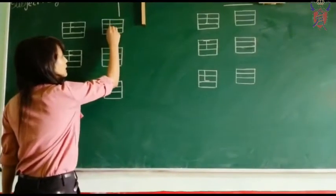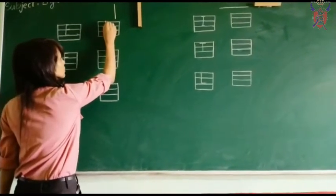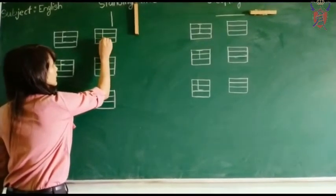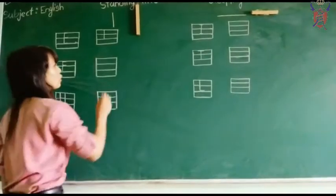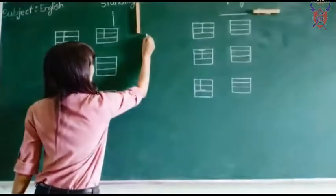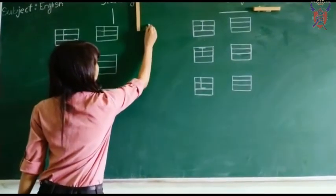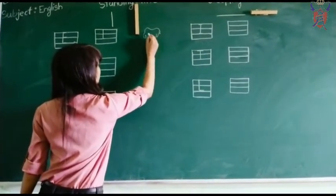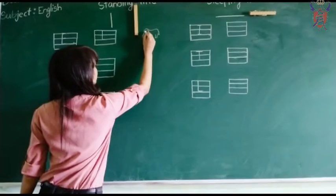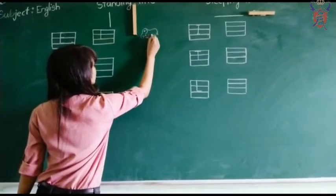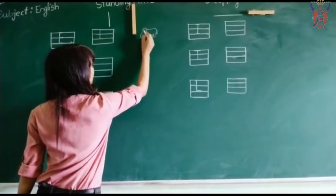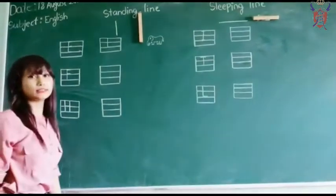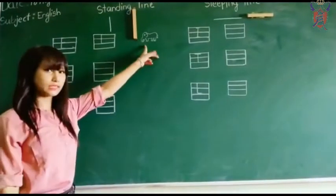See how we will write letter E. First you have to draw a standing line. In upside you will draw a sleeping line, then again a sleeping line, then again one more sleeping line you will draw. E for elephant. Elephant lives in jungle.